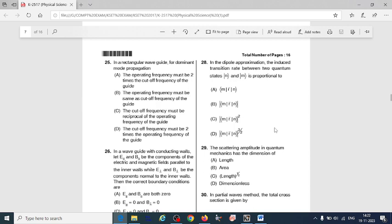First question: In the dipole approximation, the induced transition rate between two quantum states ket n and ket m is proportional to... So here we have four options. The correct answer here is...